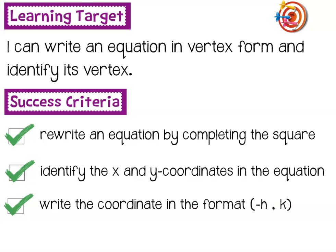You're going to need to know these three things today: Can you rewrite an equation by completing the square? Can you then identify the x and y coordinates from the numbers in that equation? And third, write the coordinate in the correct format — x comma y. We'll talk about these two letters later, h and k, but this is an ordered pair: x comma y.